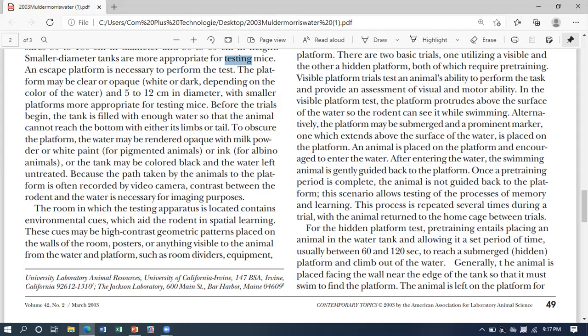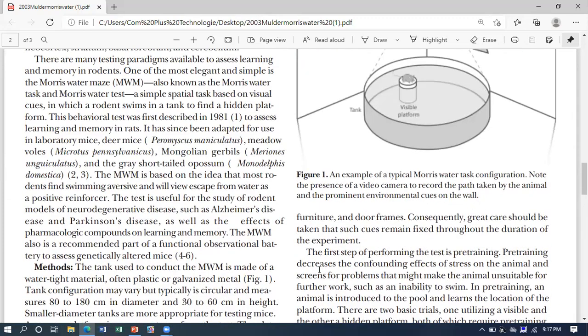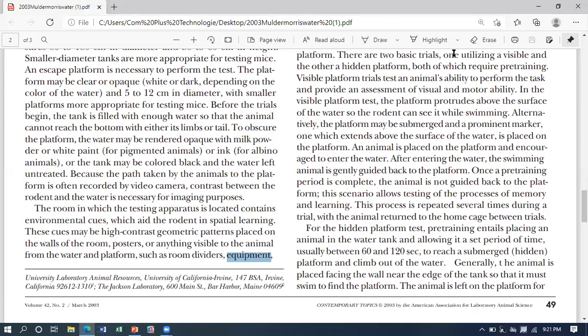The first step is to perform pre-training. Pre-training has the advantage that it decreases the confusion and stress in the rodent, so they don't have stress and confusion. We introduce animals to the pool and they learn the location of the platform. There are two basic trials - one platform is visible and the other platform is hidden.